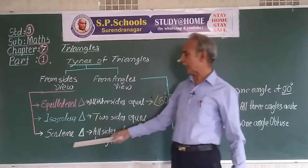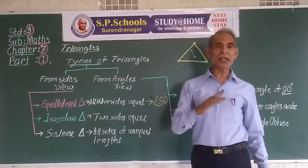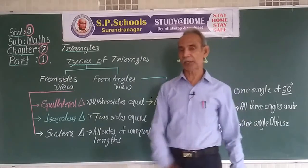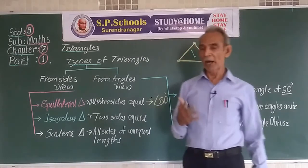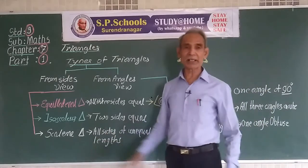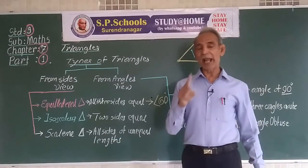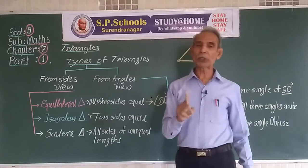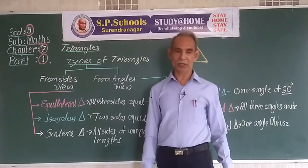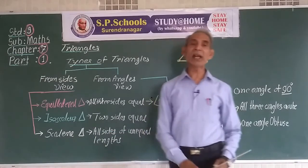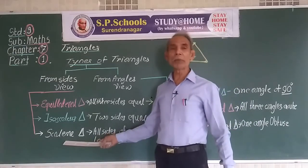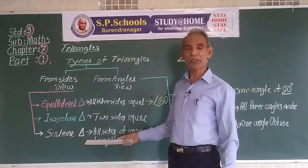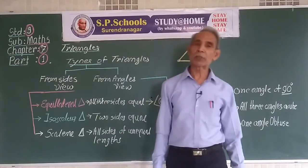In the case of a scalene triangle, as all three sides are of different lengths, all three angles will also be of different measures. The angle opposite to the largest side will be the largest, and the angle opposite to the smallest side will be the smallest.